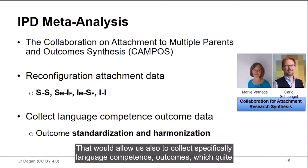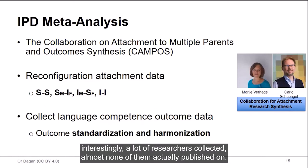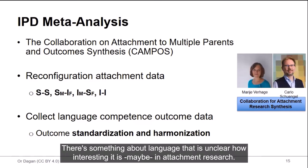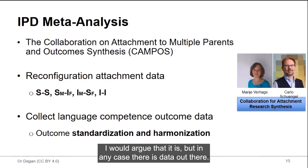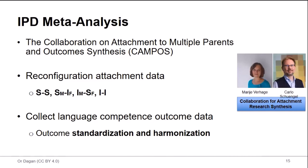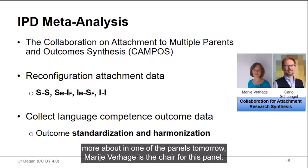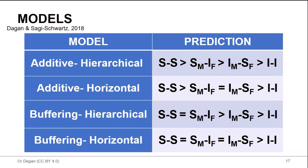And we basically started asking authors to share their data with us on the individual participant data level, such that we can take the data on children that were assessed with mothers and fathers, and reconfigure it into the four groups of interest: secure-secure, insecure-secure, insecure-insecure, and so forth. And that would allow us also to collect specifically language competence outcomes, which quite interestingly, a lot of researchers collected, almost none of them actually published on. And maybe the amount of people who sit here today is a testament to that. There's something about language that is unclear how interesting it is, maybe in attachment research. I would argue that it is, but in any case, there is data out there. We just need to use it and publish and see what's going on with it. Having this data also allows us to standardize and harmonize this outcome, which we'll talk more about in one of the panels tomorrow. Mariah Verhagen is the chair for this panel.